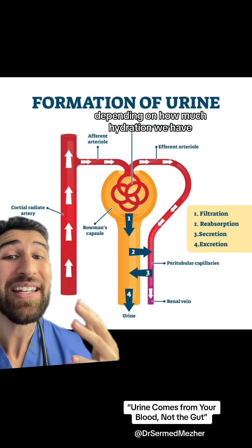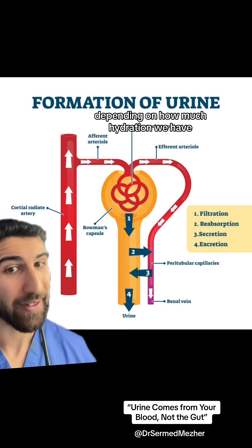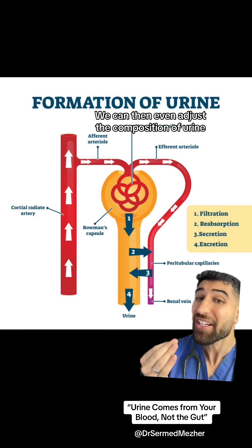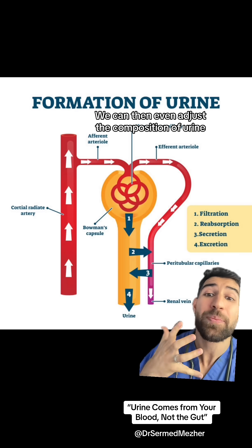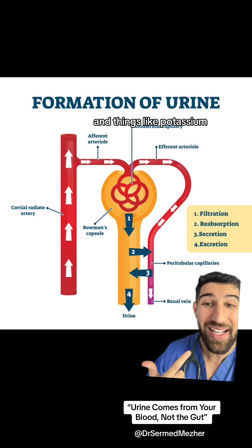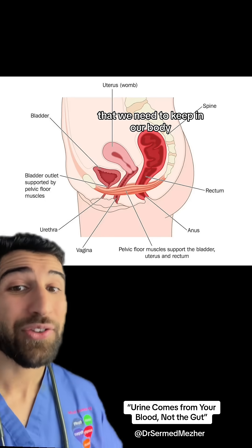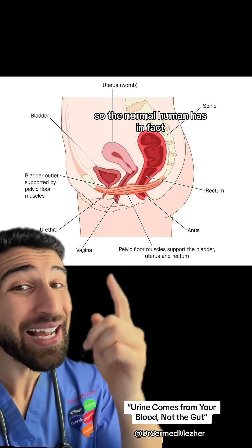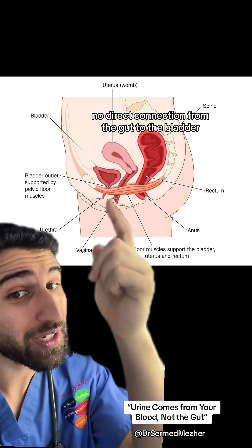Depending on how much hydration we have, we can then adjust the composition of urine through absorption, depending on how much sodium and potassium we need to keep in our body. So the normal human has in fact no direct connection from the gut to the blood.